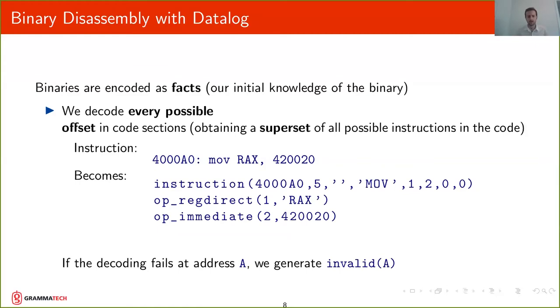And we're going to do that for every possible offset so we obtain a superset of all possible instructions in the code. If at a certain address we fail to decode any instruction then we're going to say that address contains an invalid instruction and we generate a predicate saying that address contains an invalid instruction.